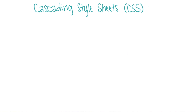But what do cascading and sheets mean? You can have several CSS files or sheets that will be referenced in HTML, and all of them will be used to find out the final and visible style for your page.